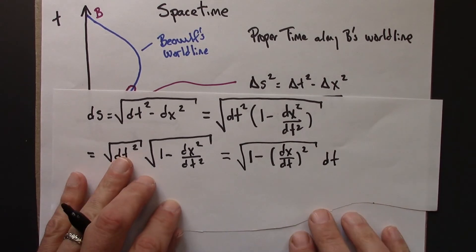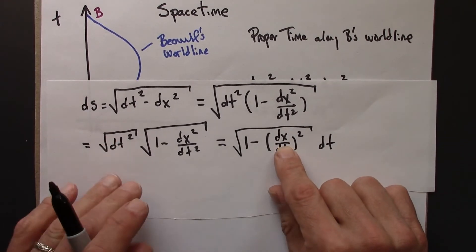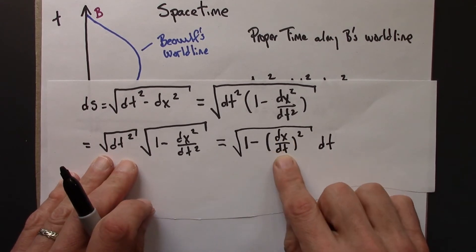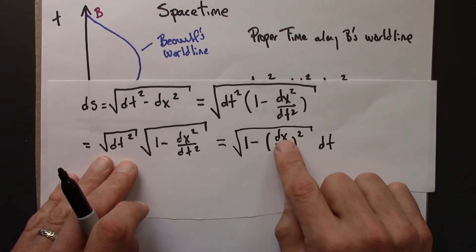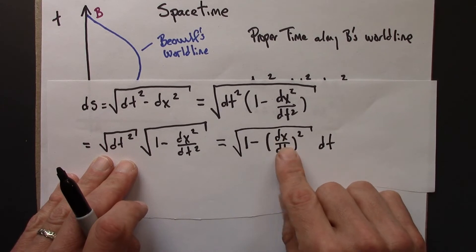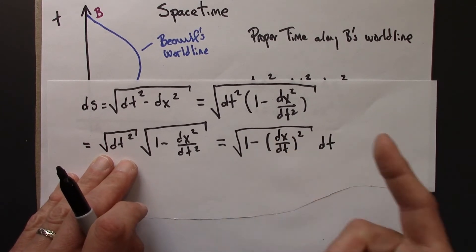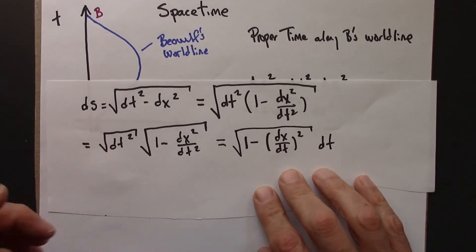There's one more nice thing that happens. Check this out. dx over dt, or delta x over delta t, that's a distance traveled over the time traveled. Hey, that's just velocity.